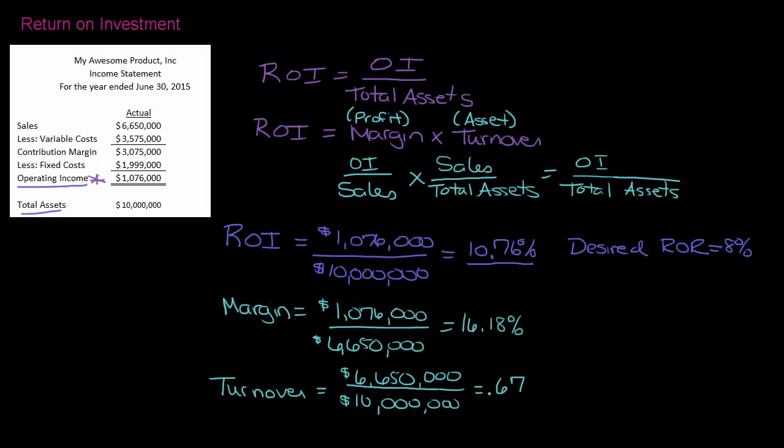The lower the number is, the less sales you're generating with your assets. So you want to have this be a high number. If the number's over one, then that means that your sales are exceeding your assets. So if I take these two numbers and I multiply them together, that equals 10.76%.